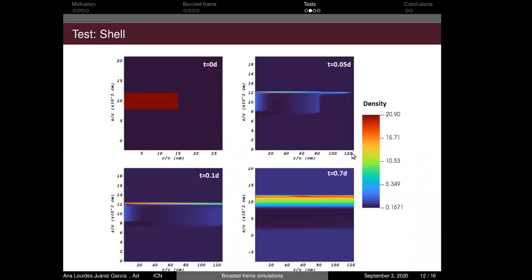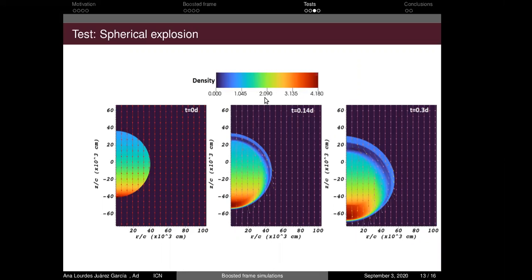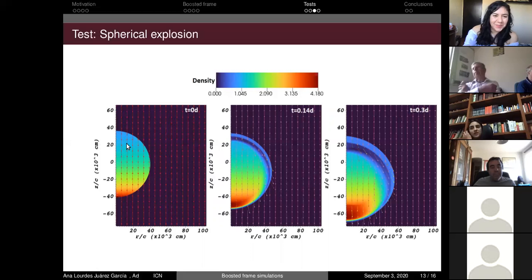My next test is a spherical explosion that in the lab frame used to be a homogeneous sphere. But as I said before, different positions correspond to different times and positions in the boosted frame. So these are maps of density again, and we can see a gradient of density inside of the sphere. And this is because the density depends on the position inside of the sphere. You have three minutes left.